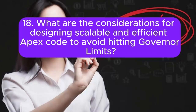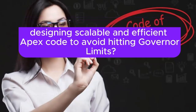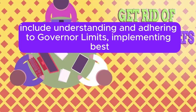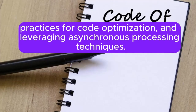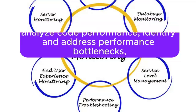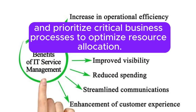Question 18: What are the considerations for designing scalable and efficient Apex code to avoid hitting governor limits? Answer: Considerations include understanding and adhering to governor limits, implementing best practices for code optimization, and leveraging asynchronous processing techniques. You should also monitor and analyze code performance, identify and address performance bottlenecks, and prioritize critical business processes to optimize resource allocation.